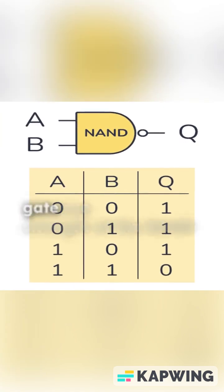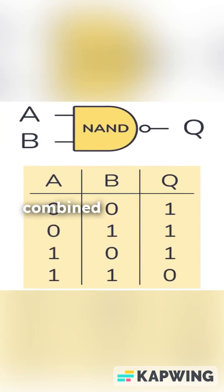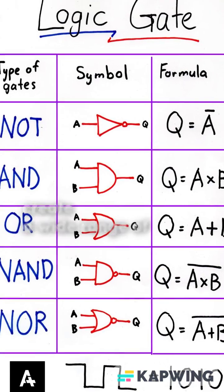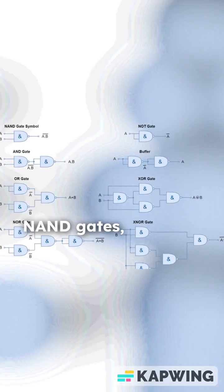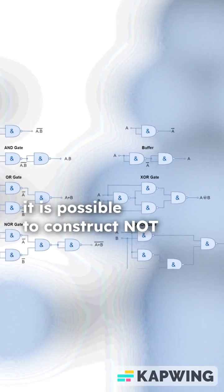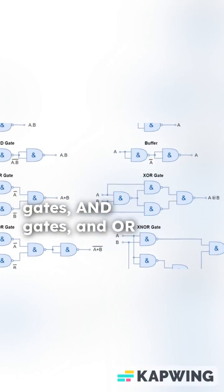The true strength of the NAND gate lies in its ability to be combined with other gates to create a wide range of logical operations. By connecting multiple NAND gates, it is possible to construct NOT gates, AND gates, and OR gates.